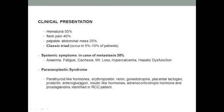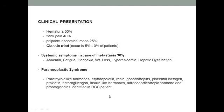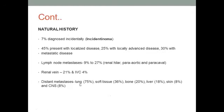Systemic manifestations include anemia, fatigue, weight loss, cachexia, hypercalcemia, and hepatic dysfunction. There are also paraneoplastic syndromes due to production of PTH-like hormones, erythropoietin, renin, gonadotropin, placental lactogen, prolactin, insulin-like hormones, ACTH-like hormones, and prostaglandins.